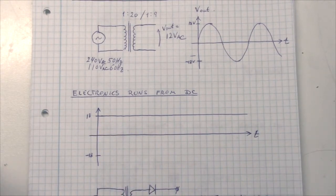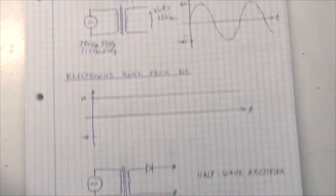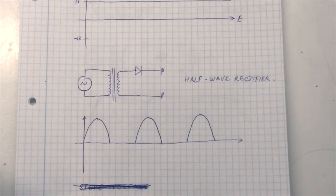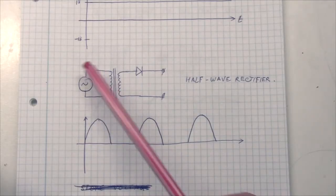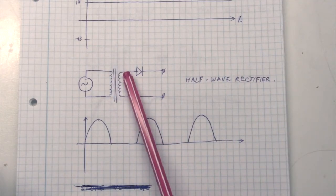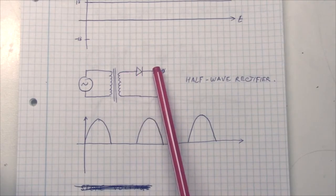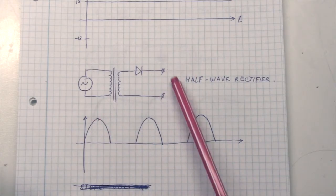But the first thing that we would think about would be, why don't we use a diode? Because with diodes, we can just get current through one way. So at least that should get rid of some of this negative voltage. And that's exactly what it does. I have drawn the circuit here, and this is called a half-wave rectifier.